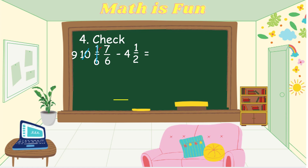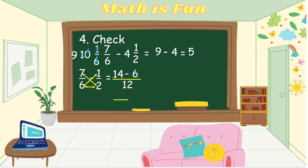Now we can subtract. For the whole numbers: 9 minus 4 equals 5. For the fractions: 7 sixths minus 1 half. Since the denominators are different — dissimilar fractions — we use the cross-product method: 7 times 2 equals 14, minus 6 times 1 equals 6, over 6 times 2 equals 12. So 14 minus 6 equals 8 over 12.